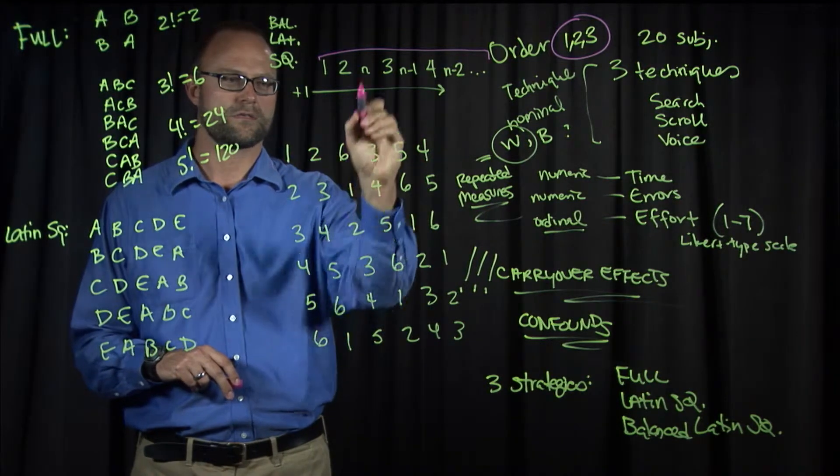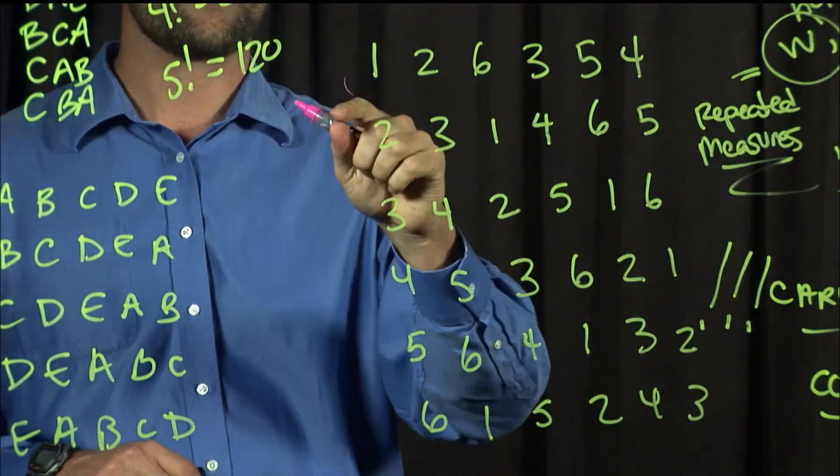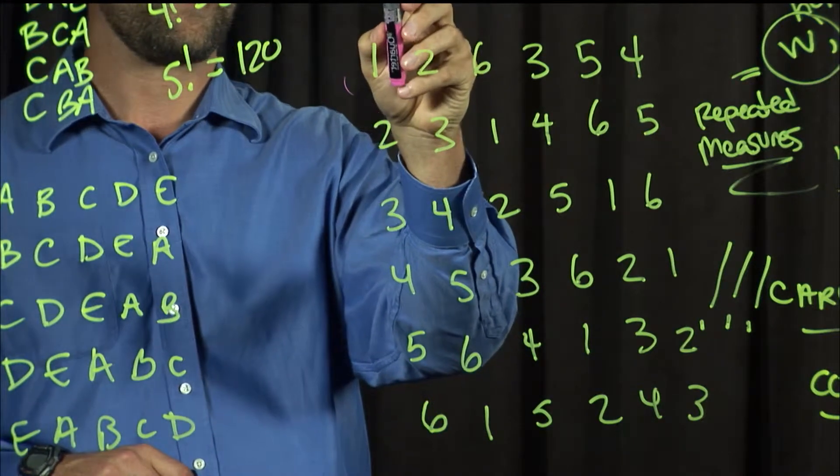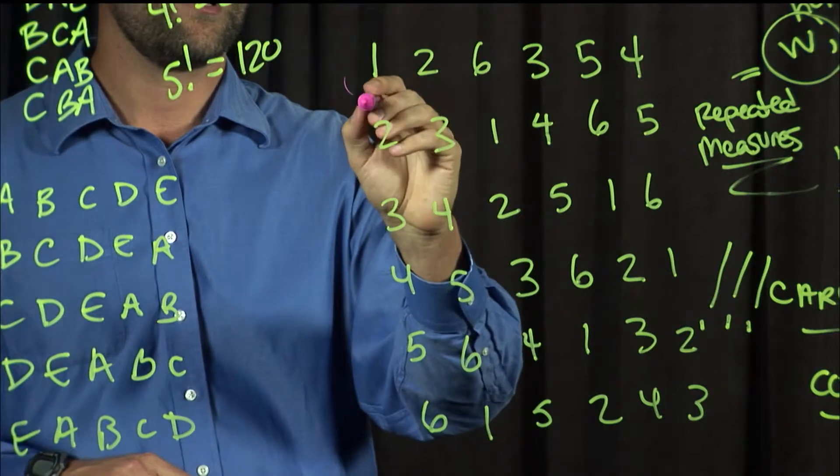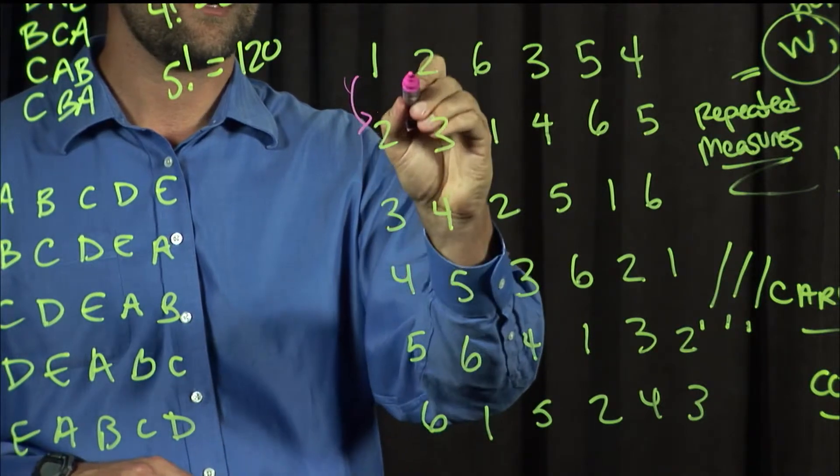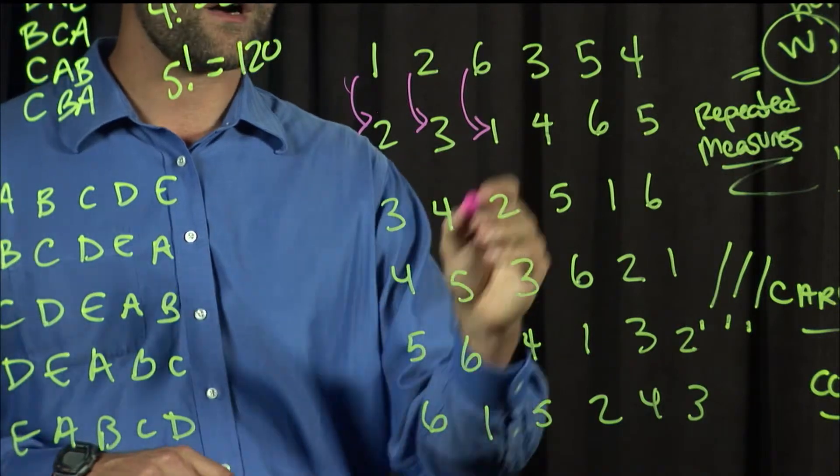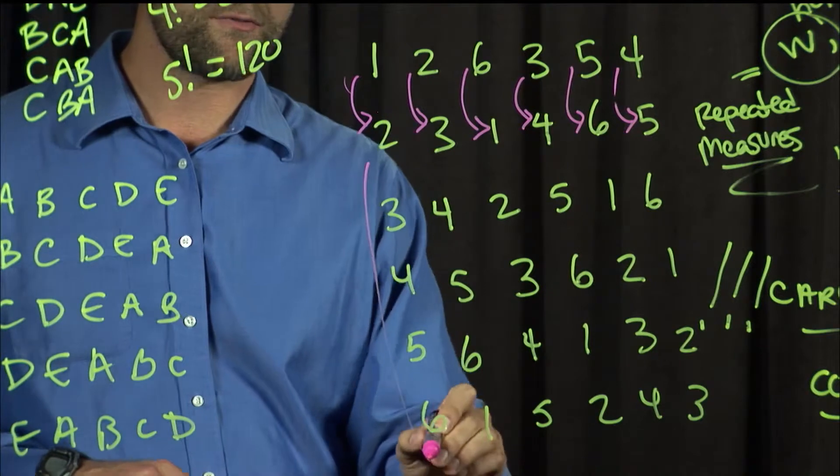For a six-level factor, the balanced Latin square looks like this in the first row: one, two, six, three, five, and four. Then after that, each row is added one to the number above it. So one becomes two, two becomes three, six wraps around to one, three becomes four, five to six, and four to five, and so on throughout the rest of the table.